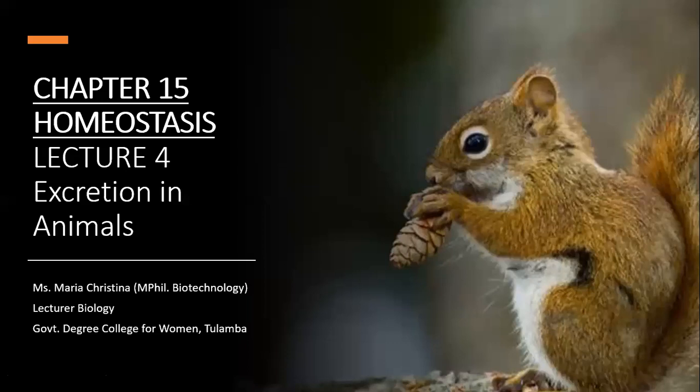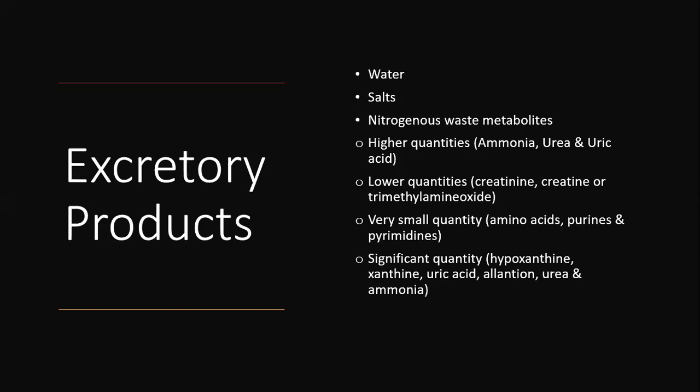Assalamu alaikum students, today we are going to start topic number 4: excretion in animals. As you know, many chemical reactions take place in the cells of living organisms all the time to carry out life processes. These chemical reactions may be catabolic or anabolic, and together they are called metabolism. Metabolism produces useful products as well as toxic products, which are excreted out of the body.